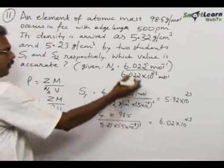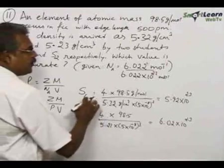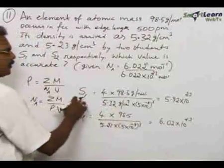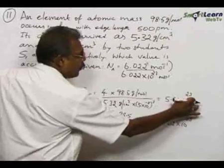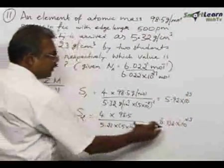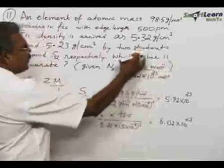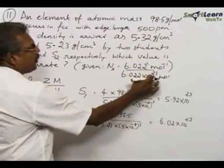If you calculate the Avogadro constant based upon their values, as per the first student's calculation the Avogadro constant comes to 5.92 × 10²³ per mole, and for the second student 6.02 × 10²³. Here you see 6.022 × 10²³.